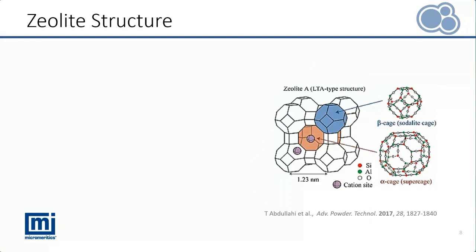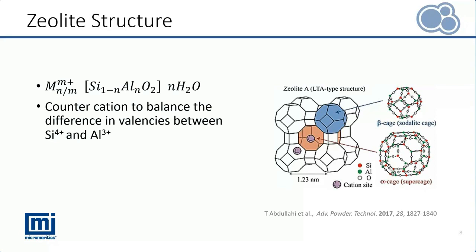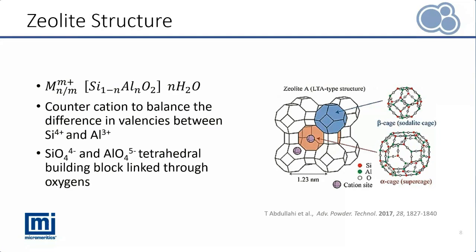Zeolite structure has three components: the extra framework cation, the framework, and the adsorbed phase, which is water. The counter cation is present to balance the negative charge from the difference in valencies between silicon and aluminum. The main framework is silica and alumina tetrahedral building blocks linked through oxygens. As shown in the picture, the silicon atom is in red, connected by oxygen in white to aluminum atom in green. The presence of these oxygen bridges in alumina are crucial since they are responsible for the acidity of zeolite.